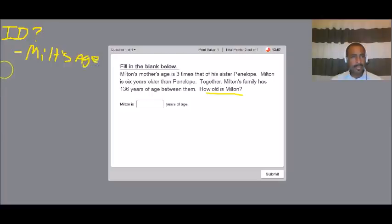Okay, then we have to state our path. And remember, that's just simply pulling information out of the problem and seeing what we have. So Milton's mother is three times that of his sister Penelope.